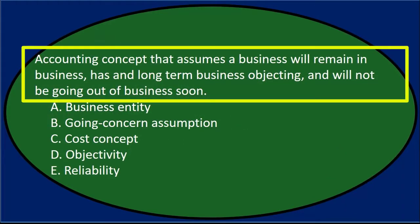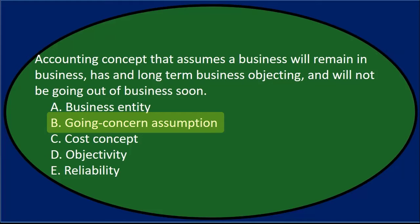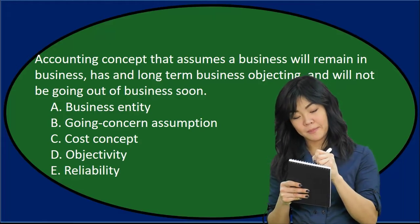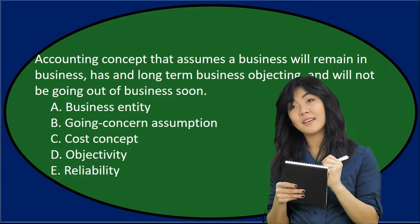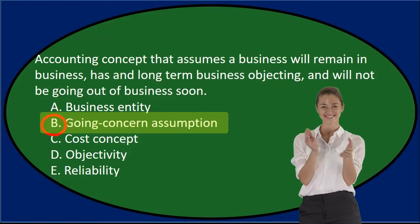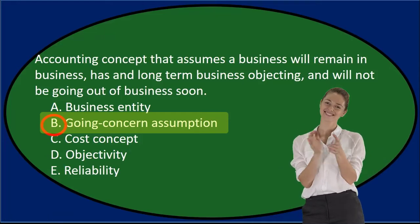Next question: the accounting concept that assumes a business will remain in business. These are assumptions we need to know when looking at financial statements. One is that we assume the business will remain in business and has a long-term objective to be in business — we consider that the going concern assumption, which in this case is B. The business entity assumption typically means we're talking about a separate business entity.